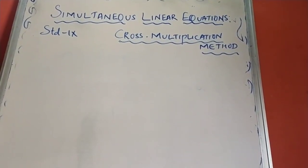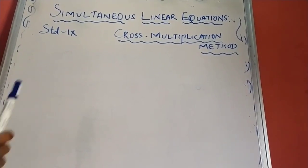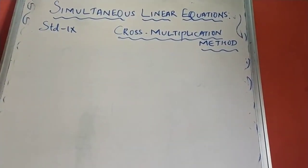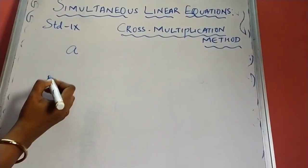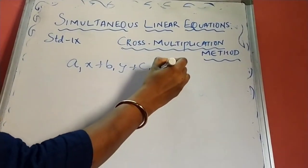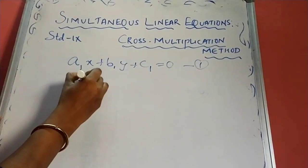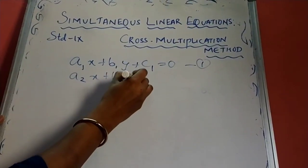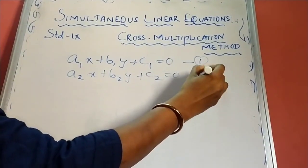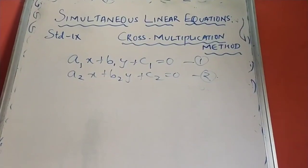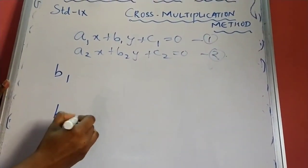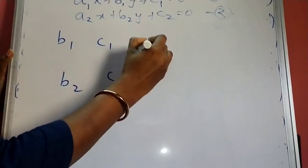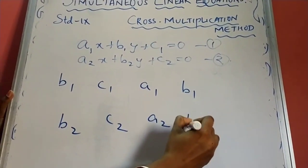Since we have already discussed the substitution method and the elimination method, we will be discussing today the cross multiplication method. As we already know, a pair of linear equations exists of the form A1X plus B1Y plus C1 is equal to 0 as the first equation, and A2X plus B2Y plus C2 is equal to 0 as the second equation. In the cross multiplication method, let us write this as B1B2, C1C2, A1A2, and B1B2.